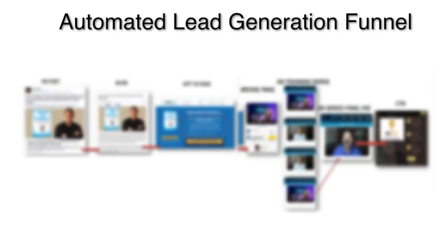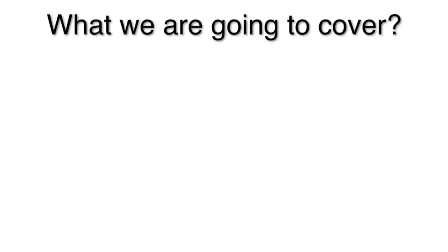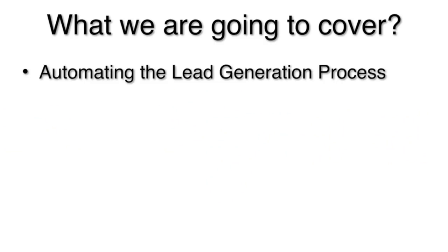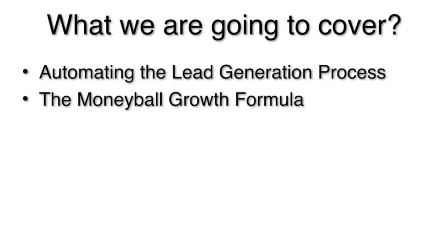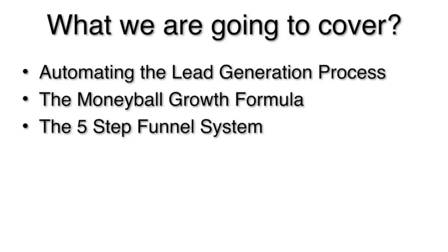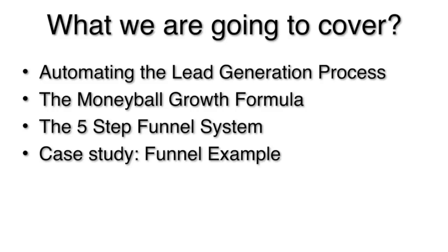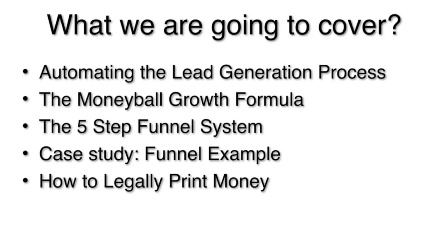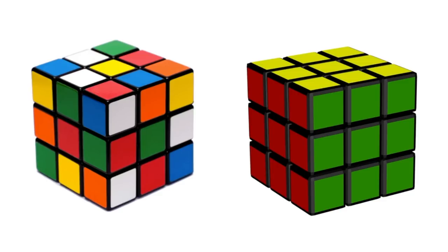The name I call it is the Automated Lead Generation Funnel. I want to talk quickly about what we're going to cover: automating the lead generation process, a thing I call the Moneyball Growth Formula, a five-step funnel system, a case study of that funnel system, and basically what I call how to legally print money.